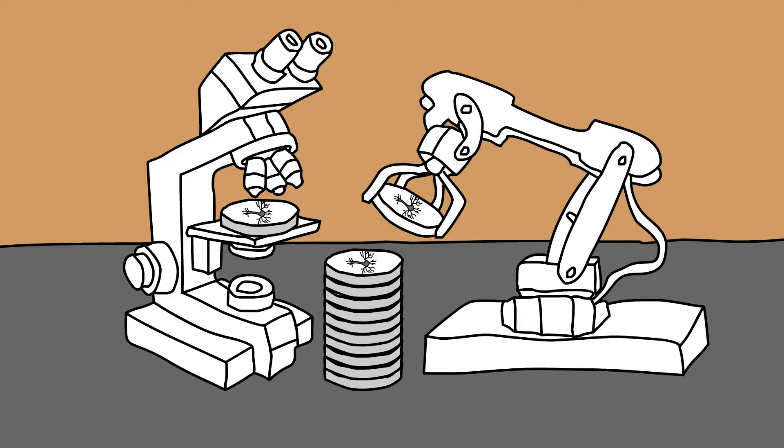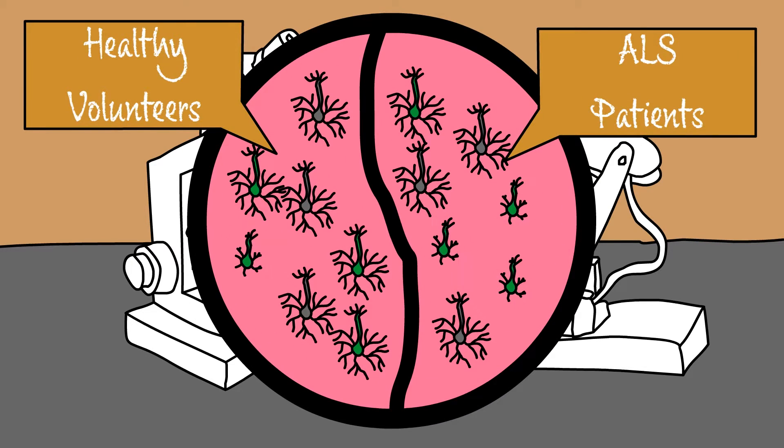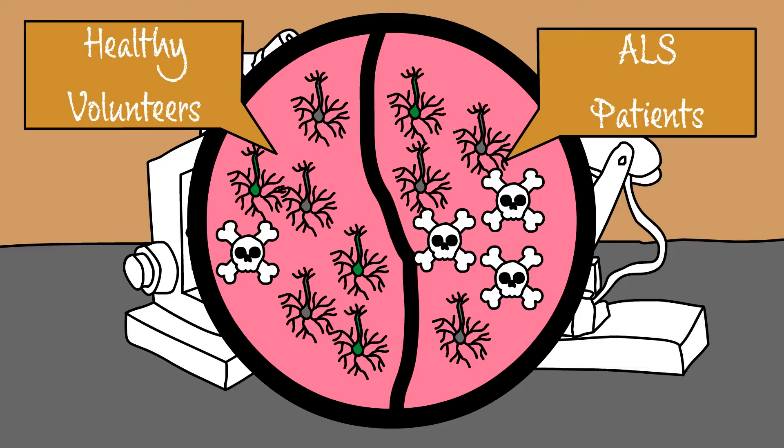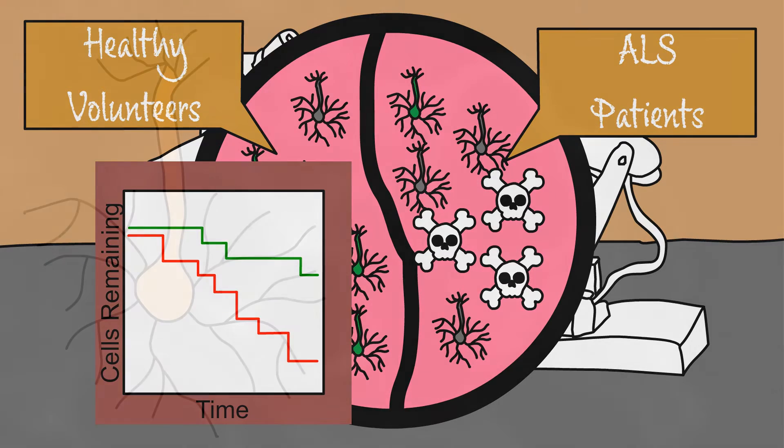Using our iPSC-derived neurons, we made a disease-in-a-dish model. We grew motor neurons from healthy volunteers side-by-side with neurons from patients with mutations in HNRNP A2B1. With a robotic microscope, we tracked the neurons over a long period of time. We found that cells from affected patients died much faster than cells from healthy volunteers. This indicates that mutations in HNRNP A2B1 are toxic to neurons.